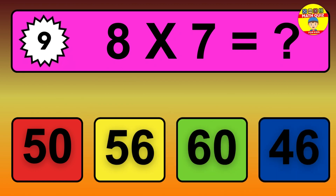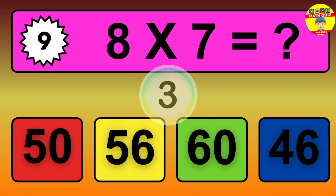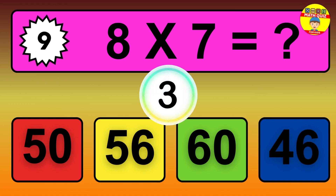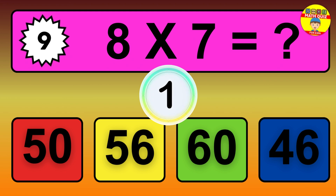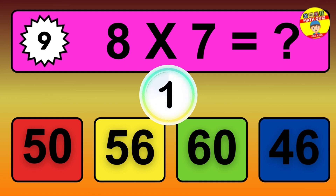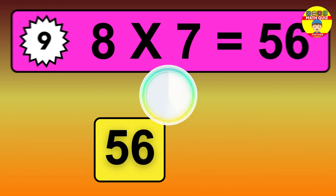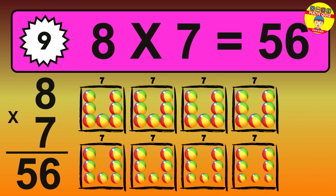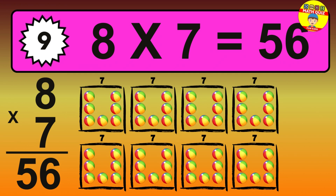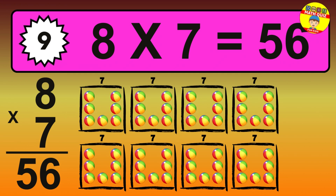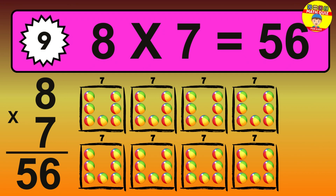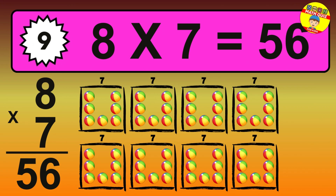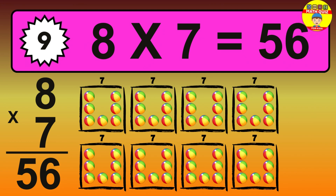Question 9. 8 times 7 equals what? The answer is 8 times 7 is 56. To calculate, we have 8 groups with 7 balls each. So how many balls do we have? 56 balls.